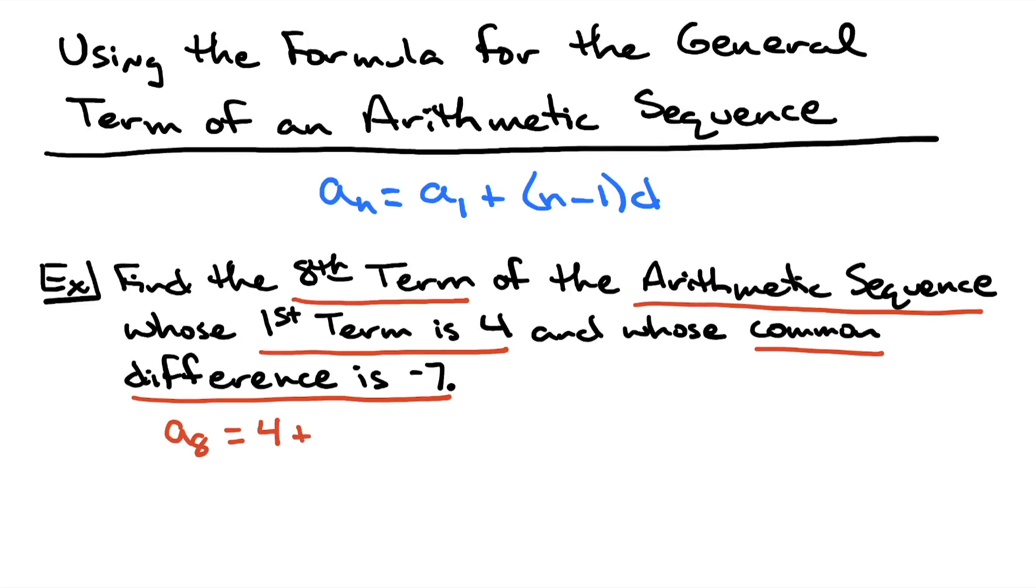Plus the quantity n, which is going to be my 8 for the nth term, minus 1, and then times that common difference of negative 7.